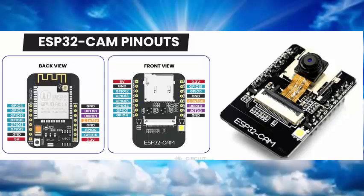The module uses two 32-bit high-performance LX6 CPUs with a frequency range of 80 MHz to 240 MHz, a pipeline architecture, and built-in hall sensors.